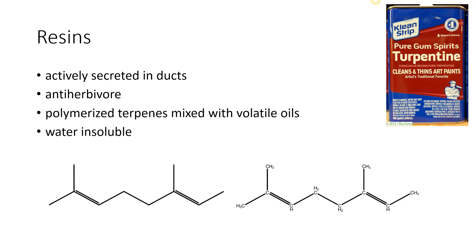A common type of resin that you get is turpentine. You can see the word terpene in it — it is polymerized terpenes. It is a type of material that will remove or dissolve a lot of different materials such as paints, and is often used as a paint thinner or to clean up paint.